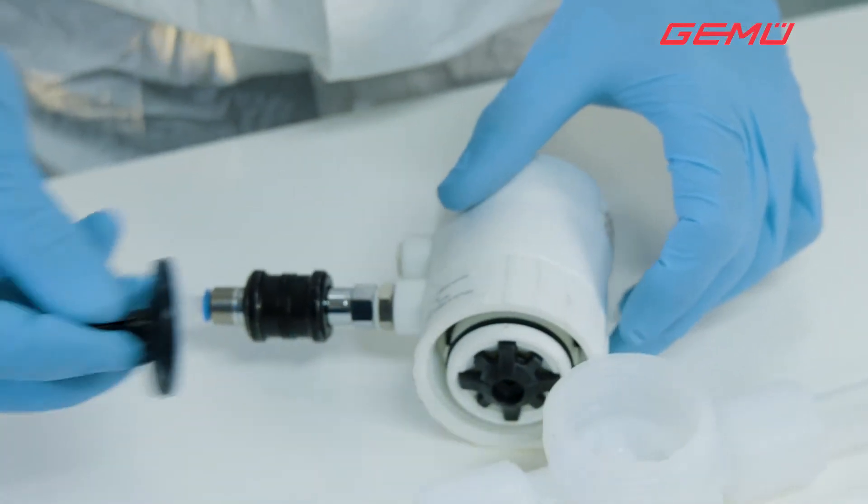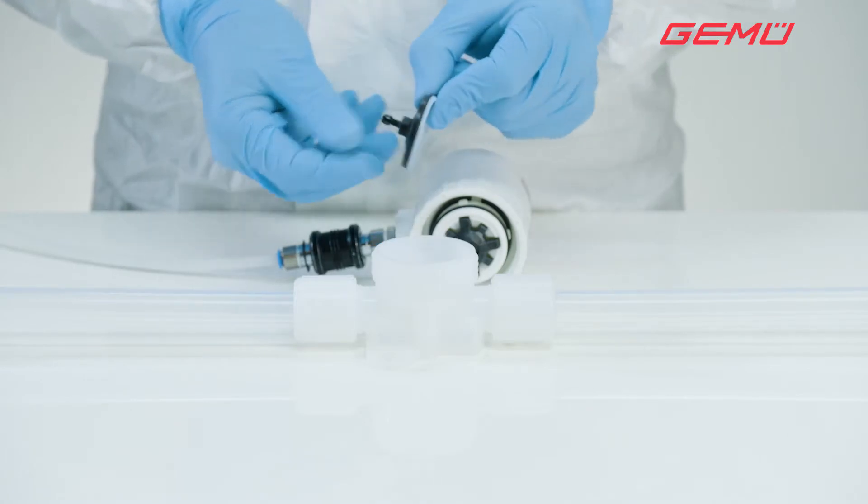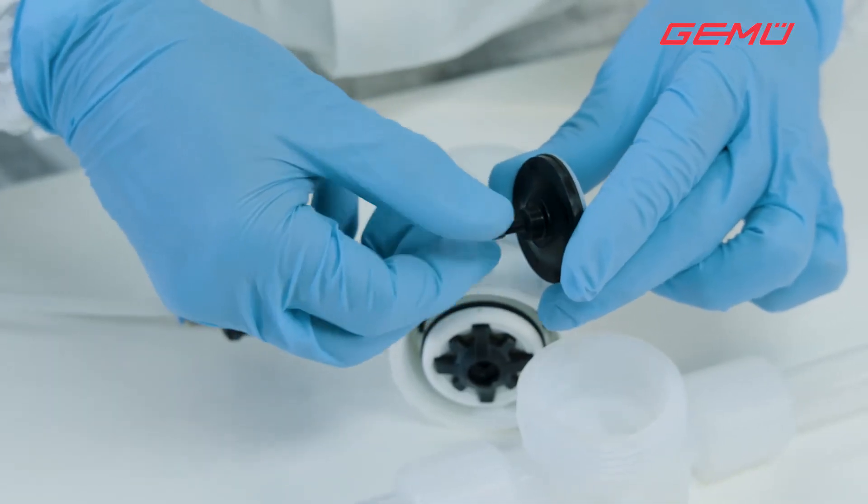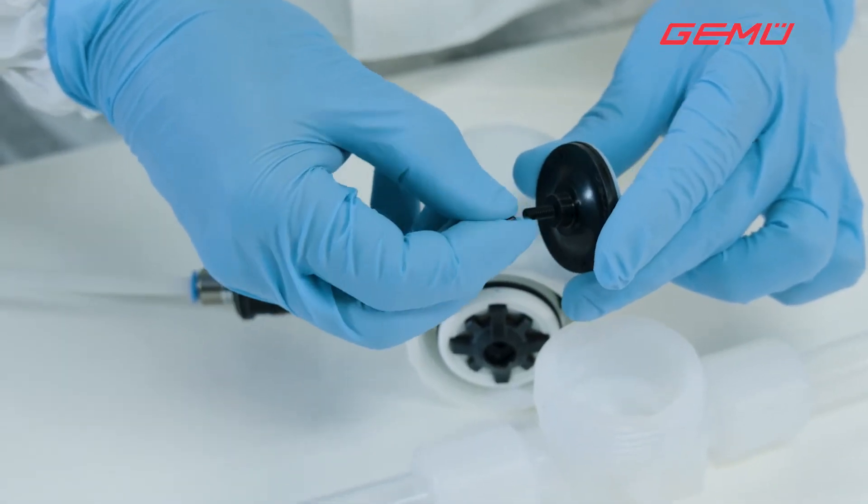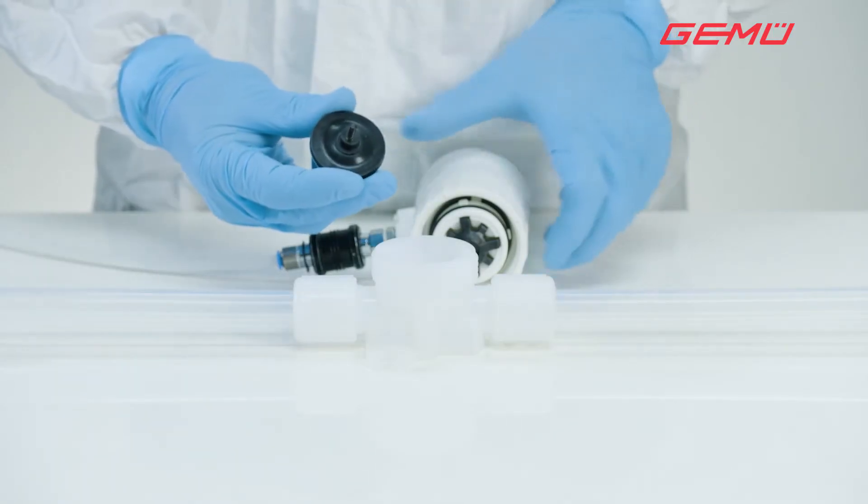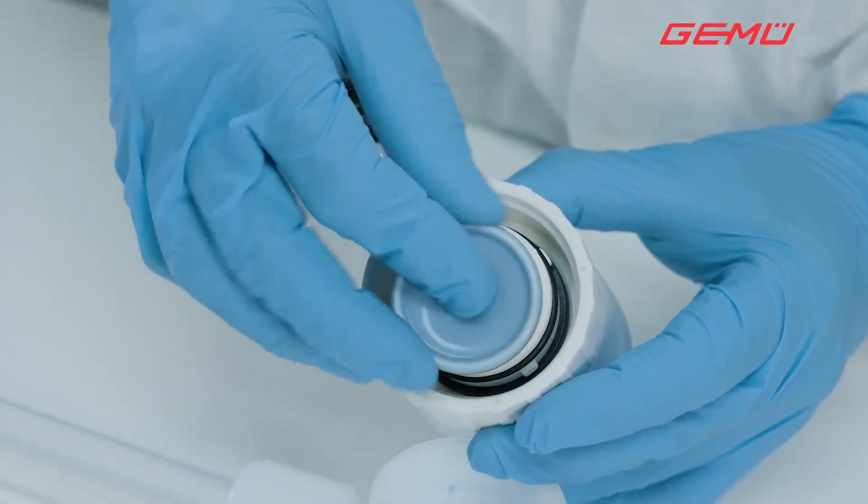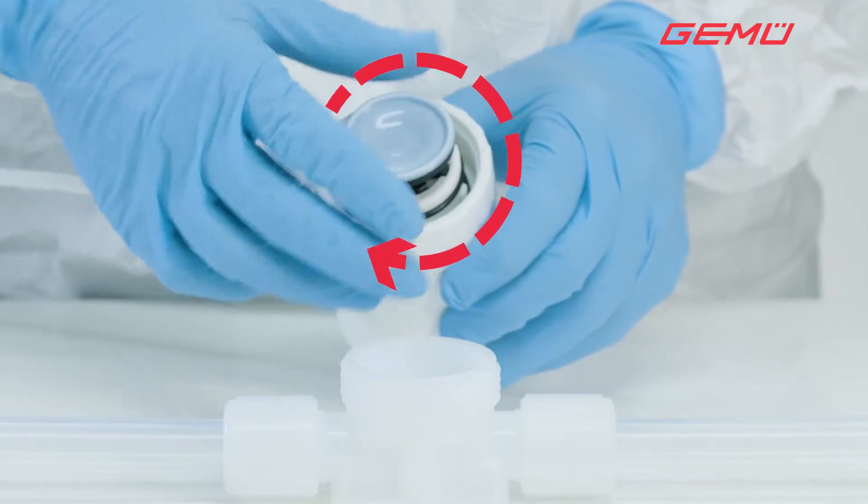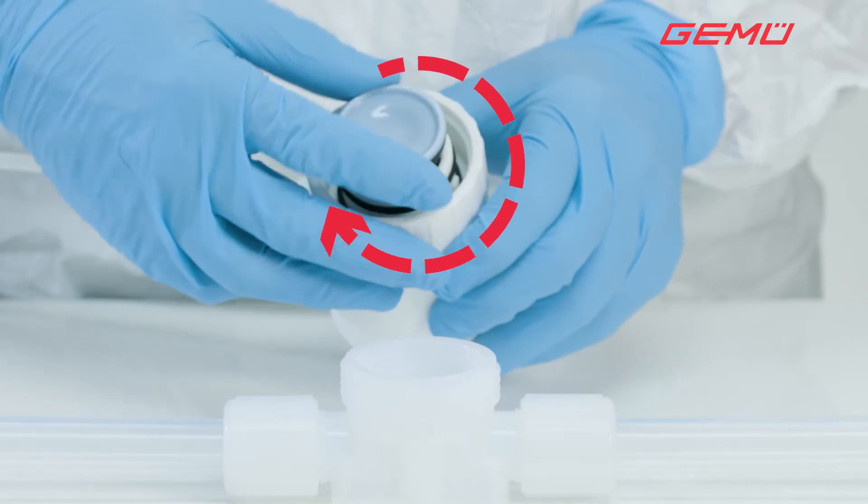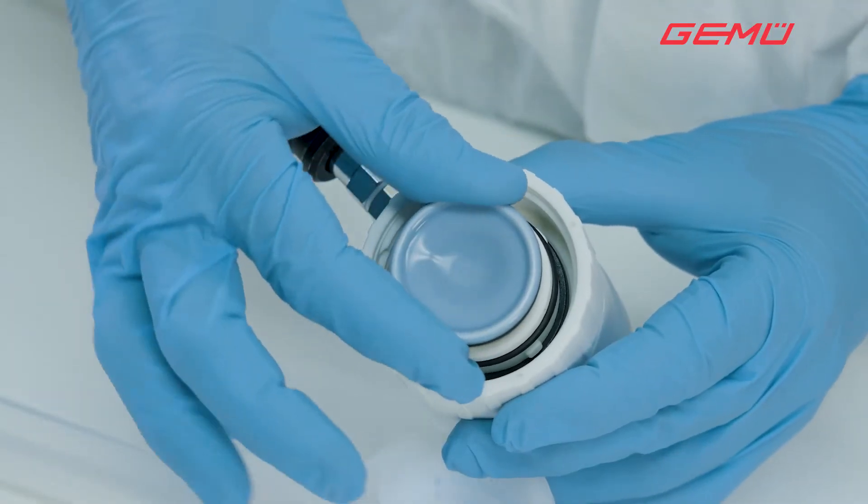Before screwing in the new diaphragm, remove the protection cap from the diaphragm pin. Then screw in the new diaphragm clockwise until resistance can be felt.